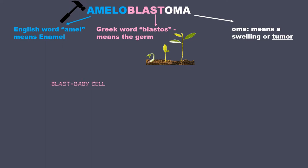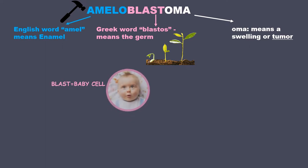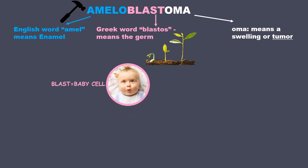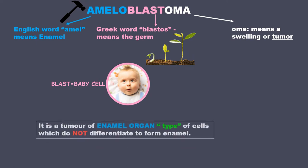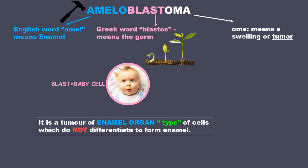Let us remember 'blasts' as baby cells. Even though the tumor is named ameloblastoma, it is a tumor of enamel organ type of cells which do not differentiate to form enamel.